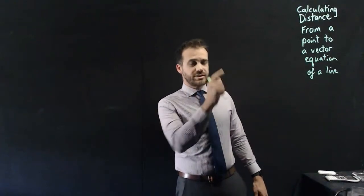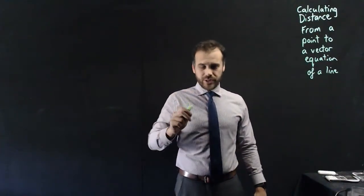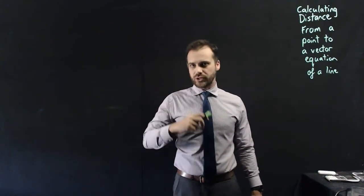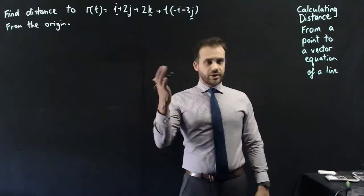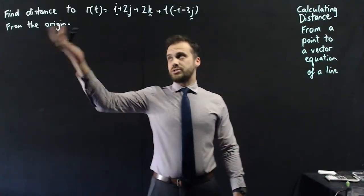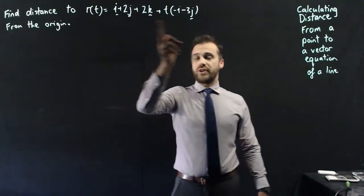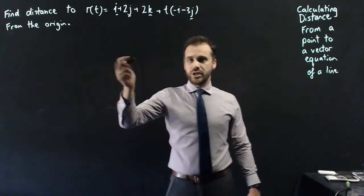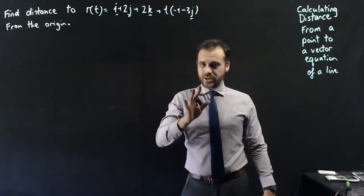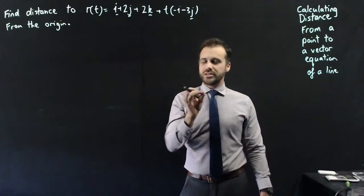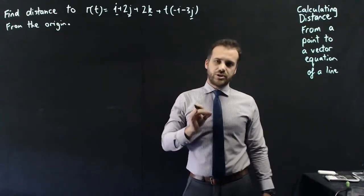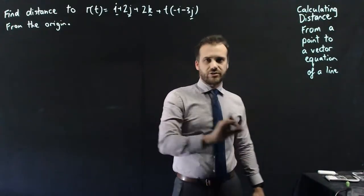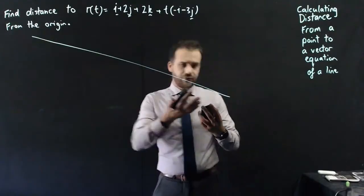We're going to be calculating the distance from a point to a vector equation of a line. We're going to find the distance to this vector equation from the origin. Before getting started, I really need to draw some pictures and make sure that your understanding of a vector equation is rock solid.